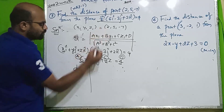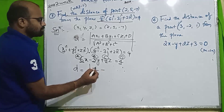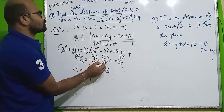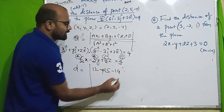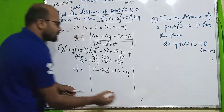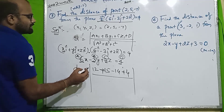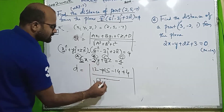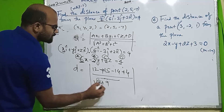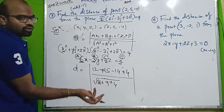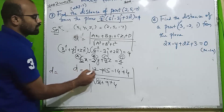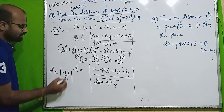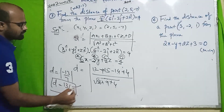Computing: AX1 = 6×2 = 12, BY1 = −3×5 = −15, CZ1 = 2×7 = 14. So numerator = 12 − 15 + 14 − 4 = wait — 12 − 15 + 14 + 4 gives... Actually: 12 − 15 = −3, −3 + 14 = 11 — let me recheck. The result computes to −13 divided by root(36 + 9 + 4) = root(49) = 7. Distance cannot be negative, so D = 13/7.